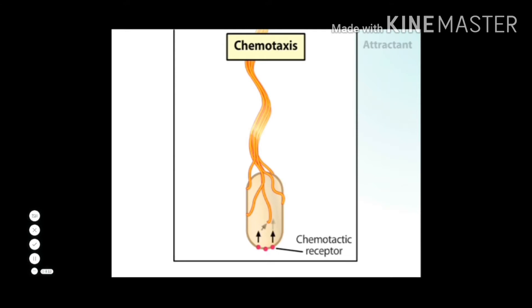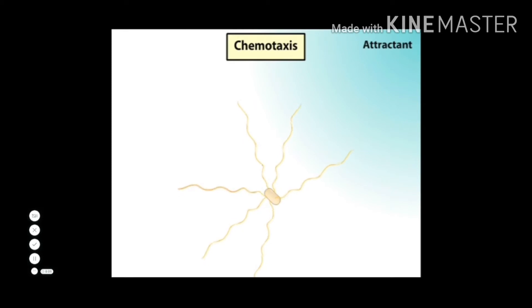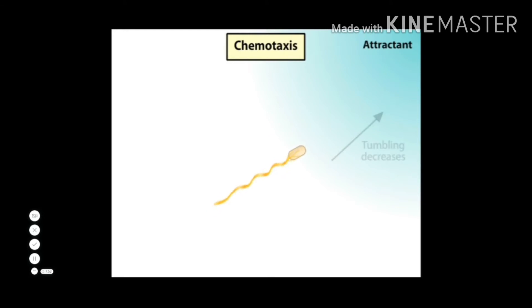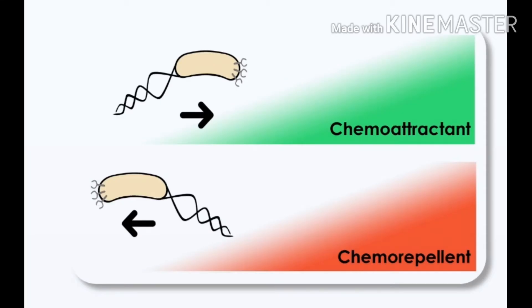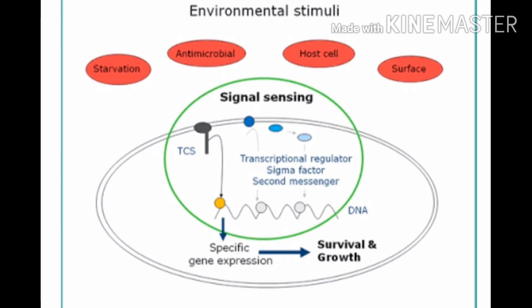If it is a chemical present as an attractant such as a nutrient, then the chemoreceptors found in its body will sense this attractant and will bring certain changes in the flagellar movement so that bacteria will move towards this attractant. In this figure you can see the movement of bacteria towards the chemoattractant and reverse movement whenever there is presence of a chemorepellent, which represents unfavorable conditions for its growth. In this way, bacteria responds to various environmental stimuli.